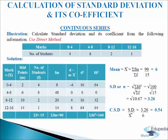In the next column we will write fm. We will multiply frequency with midpoints. So 4 into 2 gives 8, 8 into 6 gives 48, 2 into 10 gives 20, and 1 into 14 gives 14. We will add up the values and get sigma fm equals to 90. By these values we will calculate mean: sigma fm divided by sigma f equals to 90 divided by 15, giving us 6 as the mean.